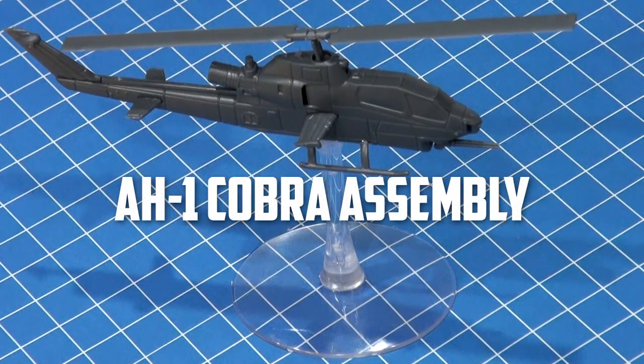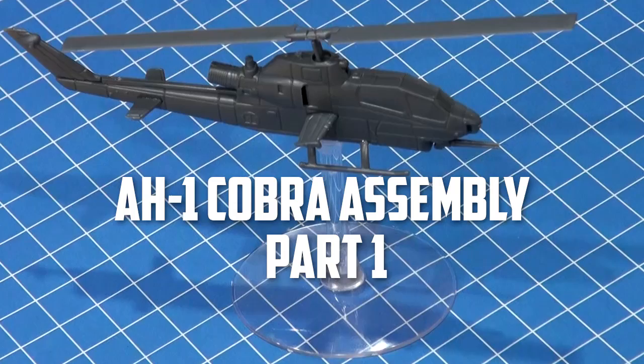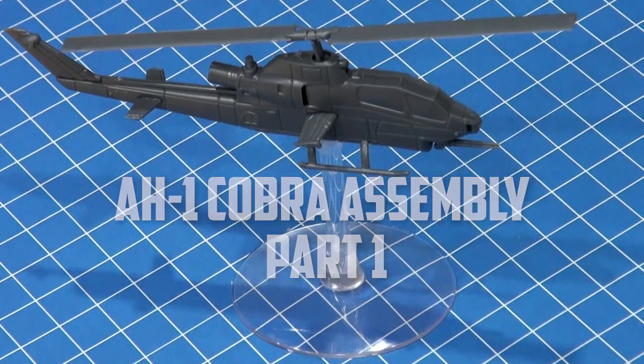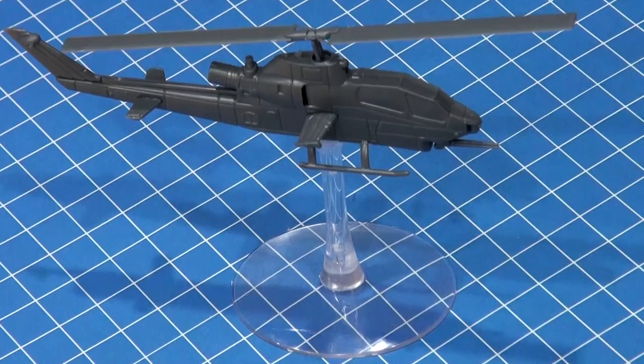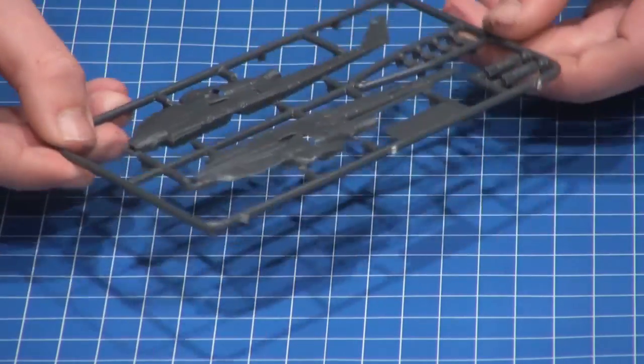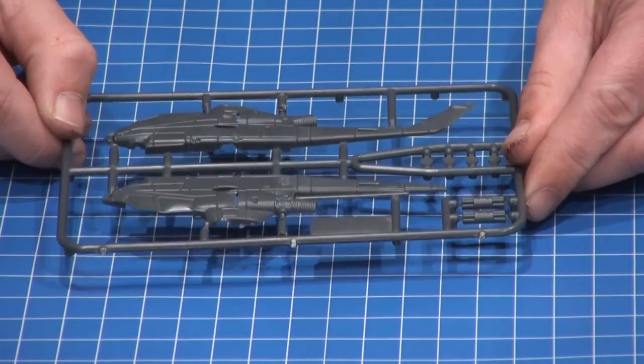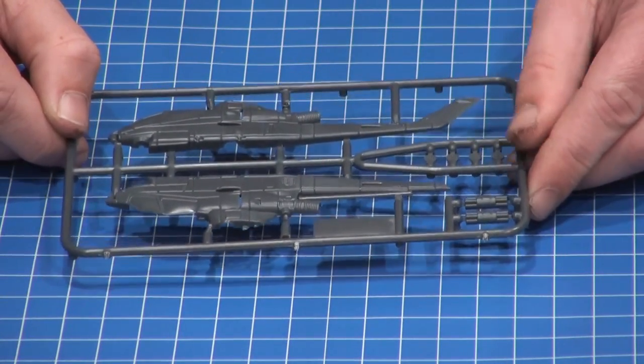Today we are here to assemble a Battlefront 1-100 scale AH-1F Cobra Tech Helicopter. It comes in four sprues, so the first sprue is this one here which will contain primarily your fuselage sections.